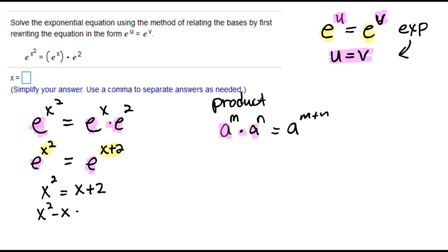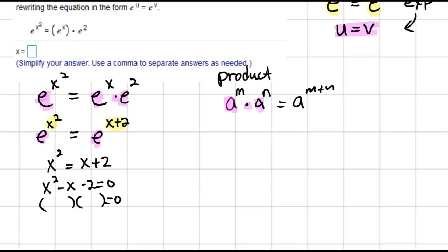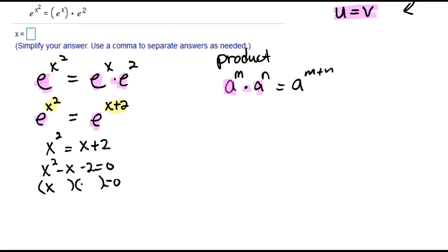So x times x would give me x squared, 2 times 1 would give me 2, and I need a minus on the 2 and a plus on the 1 to make sure I get negative 2 when I multiply and negative 1 when I add.